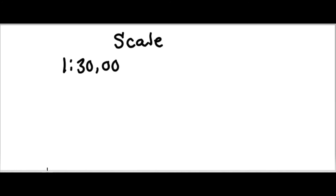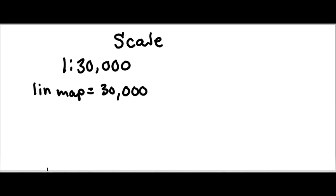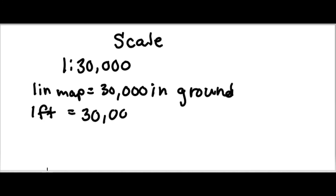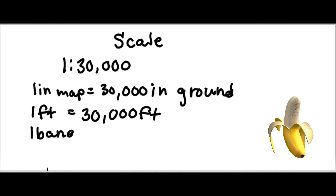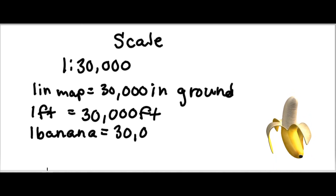Notice this is a unitless measurement, which means that we can put any unit in there as long as it's the same unit on each side. It would be true that 1 inch on the map equals 30,000 inches on the ground, 1 foot on the map equals 30,000 feet on the ground — even 1 banana on the map equals, you guessed it, 30,000 bananas on the ground.